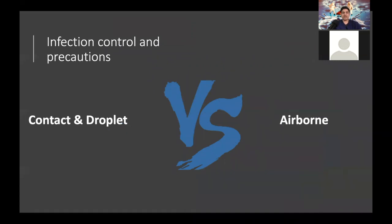Regarding infection control precautions for healthcare workers, there has been debate. Most societies like the WHO and Canadian societies recommend contact and droplet precautions plus goggles and face shield. The US CDC initially included airborne precautions, but due to the shortage of N95 masks, they currently recommend contact and droplet until the supply chain recovers. All societies agree that if doing a procedure that may increase the risk of splashing or aerosol generation, you must also use airborne precautions.